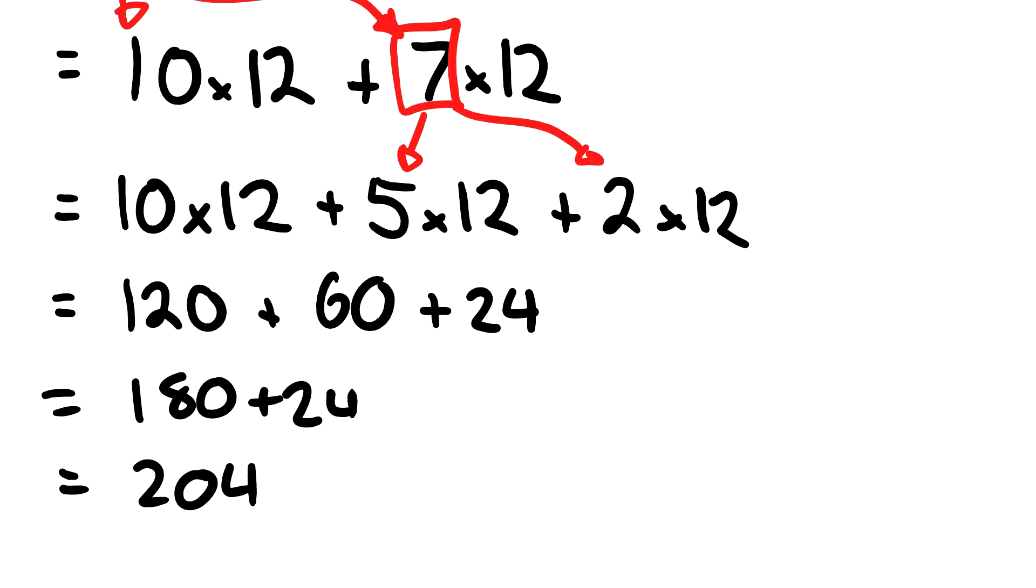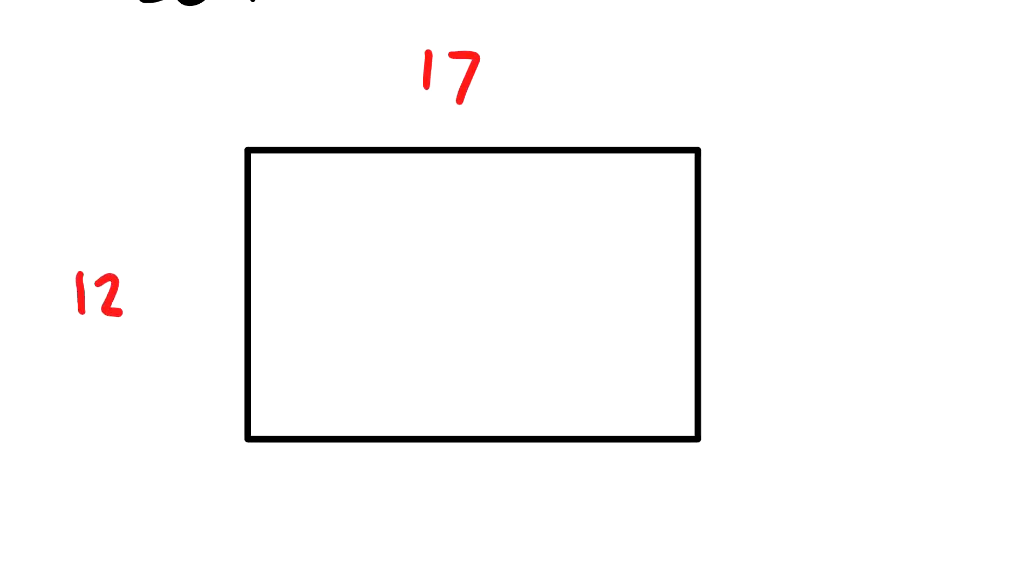As you can see, we're breaking them up to make it easier each time. Now there's another way to do this, it's what we like to call the area method. So if I have a shape such as this, I can write my multiplication, so I can have 17 up here and I can have 12 over here.